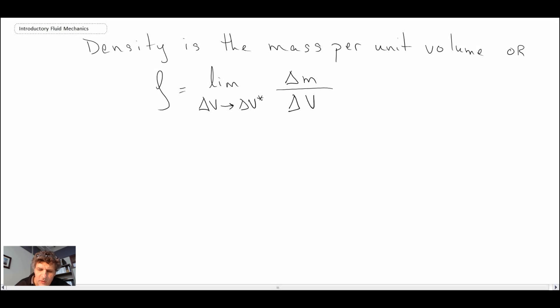It turns out that this delta V star that I've indicated here approaches a certain value, about 10 to the minus 9 millimeters cubed. Once we approach that, we start to be able to have the continuum approximation or assumption, where we assume that the properties won't change much as we increase in our sample size.